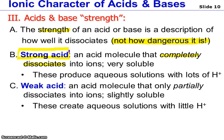A weak acid would not dissolve as much. It would only partially dissociate, or it might even not dissociate at all. So it is going to have much fewer hydrogen ions, making a solution that has less hydrogen ions.